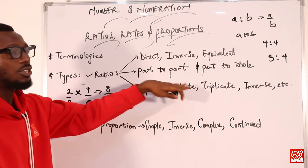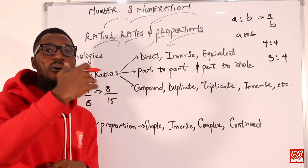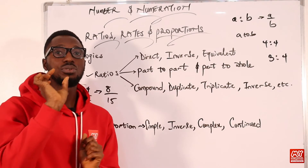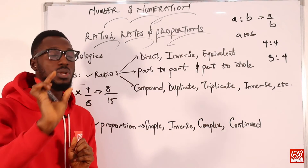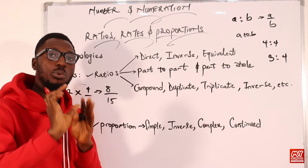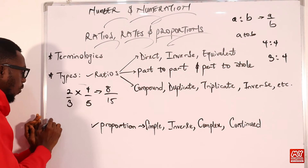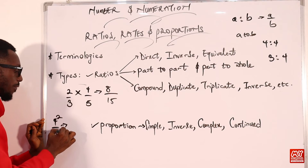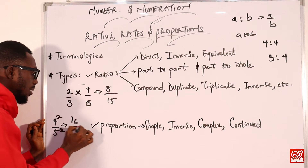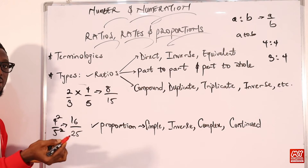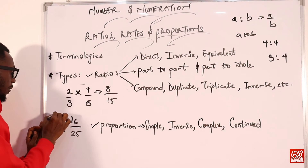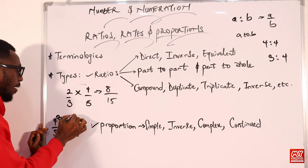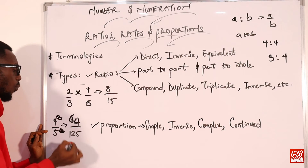Duplicate ratio means making another copy — you introduce a square to that ratio or relationship. For instance, the duplicate of 4 over 5 would be 4 squared over 5 squared, which is 16 over 25. The triplicate would be 3 copies — 4 cubed over 5 cubed — which amounts to 64 over 125.